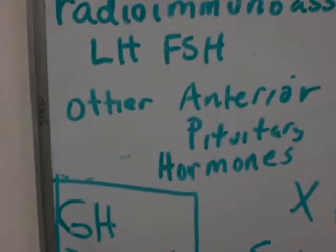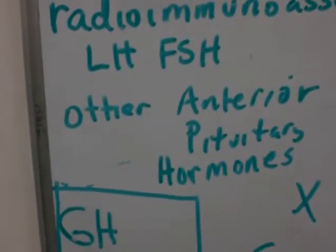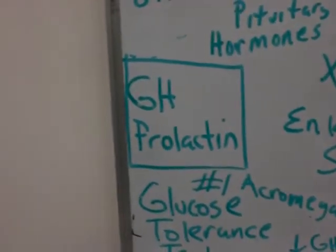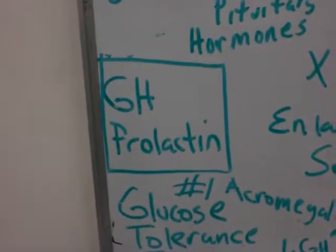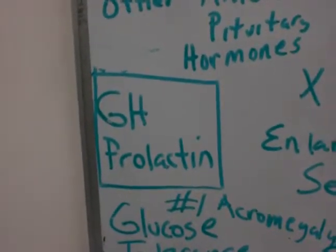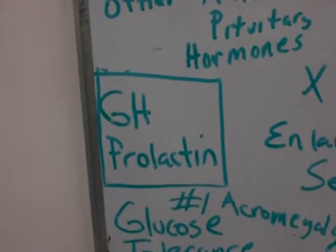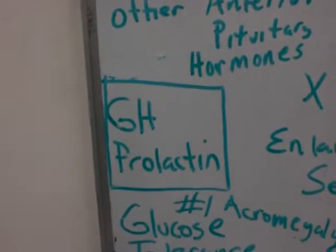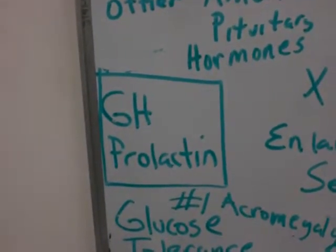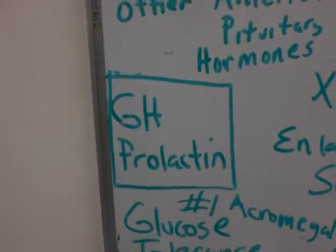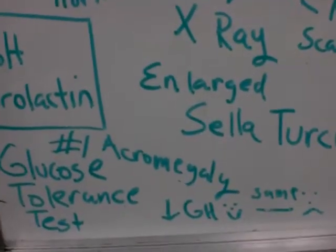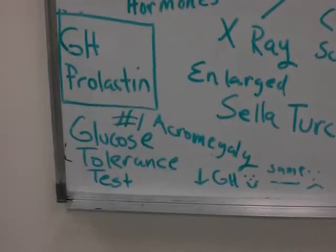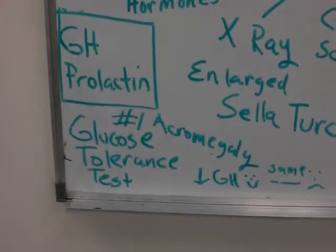They may do a complete workup checking all the levels of the anterior pituitary hormones, but for our study here what we're really going to focus on is growth hormone and prolactin. If a person has hyperpituitarism, what will manifest most often will be elevated growth hormone and elevated prolactin. But in acromegaly — the adult onset of hyperpituitarism — the number one test will be the glucose tolerance test.